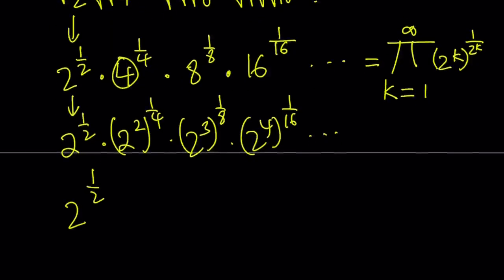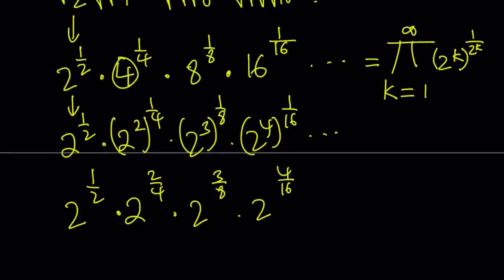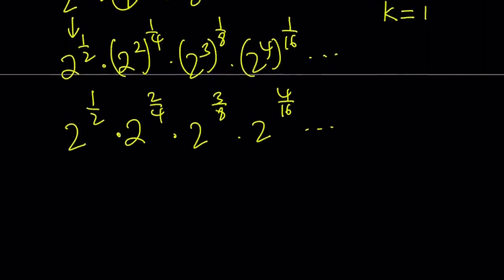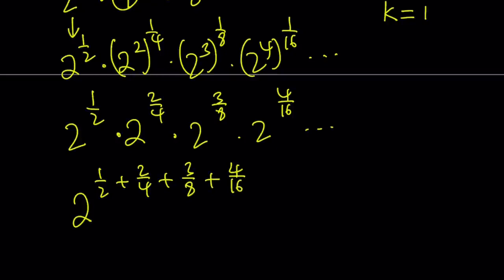Now when you multiply, I don't want you to simplify the exponents. 2 times 1 fourth is going to be 2 fourths. This is going to be 2 to the power 3 eighths, and then 2 to the power 4 sixteenths, so on and so forth. Again, it's tempting to simplify, but don't do it because we want to see the whole pattern. Now since all the bases are 2s, we can go ahead and just add the exponents: 1 half plus 2 fourths plus 3 eighths plus 4 sixteenths, so on and so forth.